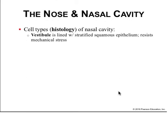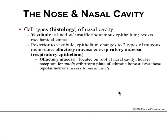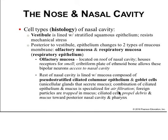The cell types of the nasal cavity in the vestibule consist of stratified squamous epithelia that resist mechanical stress. Behind the vestibule, the epithelium changes to two types of mucous membrane: olfactory mucosa and respiratory mucosa. The olfactory mucosa is located on the roof of the nasal cavity and houses receptors for smell, while the cribriform plate of the ethmoid allows those bipolar neurons access to the nasal cavity. This is one of the few special senses that bypasses the thalamus and the only region of the brain that periodically regenerates. The rest of the nasal cavity is lined with pseudostratified ciliated columnar epithelia and goblet cells—a combination that traps particles for air filtration. Foreign particles are propelled toward the posterior nasal cavity and pharynx in a process known as the mucociliary escalator.